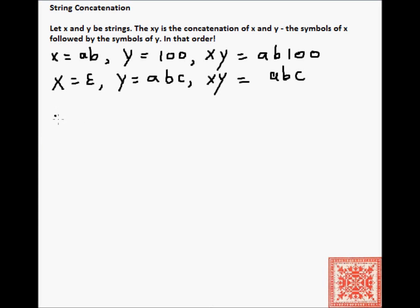If we concatenate epsilon and y, we're going to end up with abc because x is the epsilon, the empty string. In general, for any string x, if we concatenate epsilon to the right of x or to the left of x, prefix and postfix, we end up with x for any string x whatsoever.